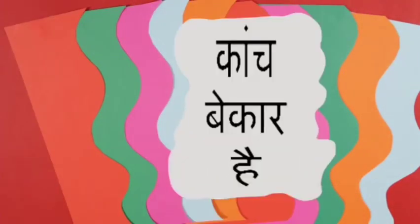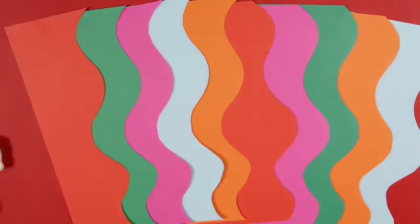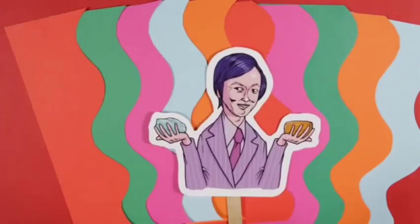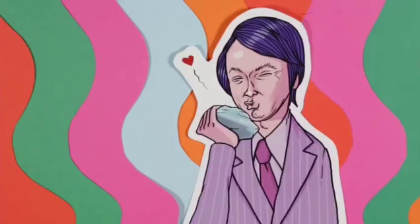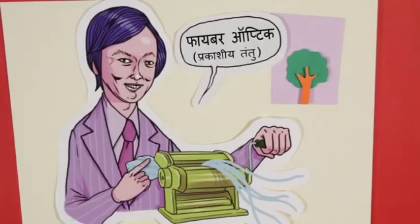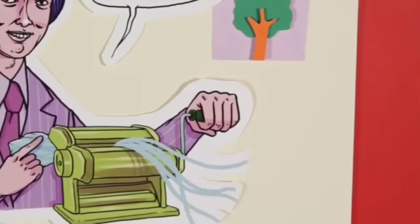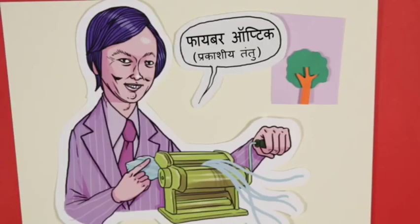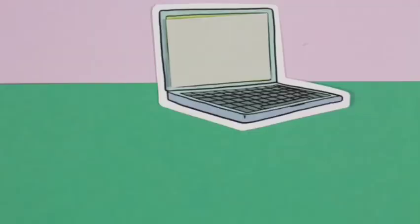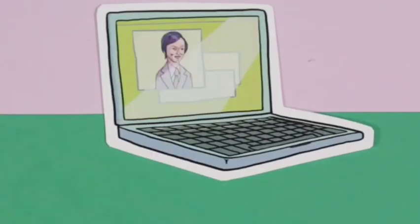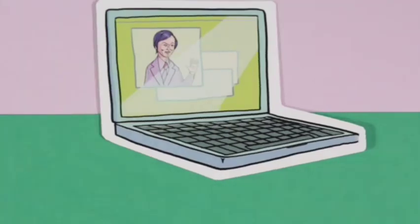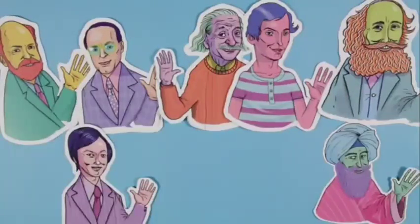रोशनी के इस रास्ते में हमारे आखिरी हीरो हैं चार्ल्स काव। 1960 के करीब सभी इंजीनियरों का मानना था कि टेलीफोन या संचार के लिए कांच एक उपयोगी माध्यम नहीं है। लेकिन चार्ल्स काव और जॉर्ज हॉकम का विश्वास था कि कांच तांबे से कहीं ज्यादा बेहतर काम करेगा। उन्होंने पाया कि कांच के शुद्ध रेशों के बंडल बनाए जाएं तो वो रोशनी के सहारे सूचना को बहुत बड़े पैमाने पर दूर और जल्दी से पहुँचा सकते हैं। आज उन्हीं की वजह से हम मोबाइल फोन और इंटरनेट का इस्तेमाल करके दुनिया के किसी भी कोने में एक पल में संपर्क कर सकते हैं। इन सभी वैज्ञानिकों ने प्रकाश के विषय में इतिहास रचा है।